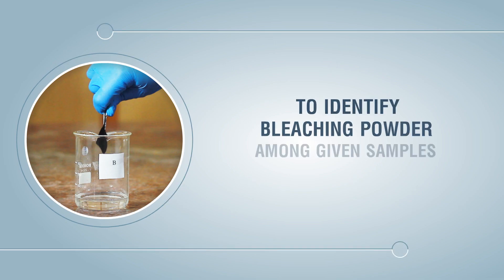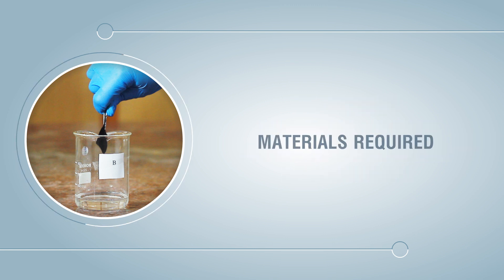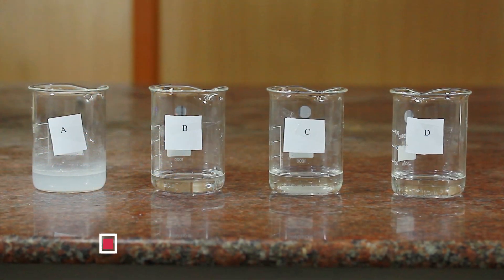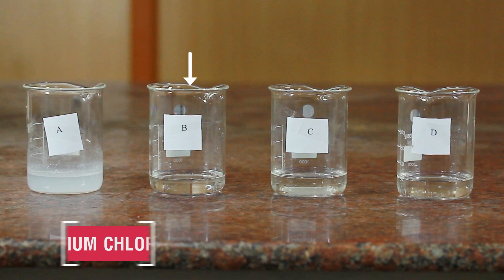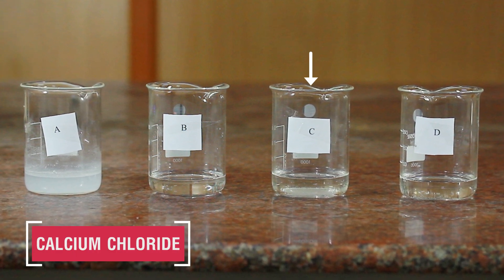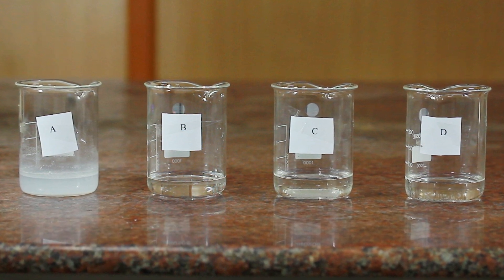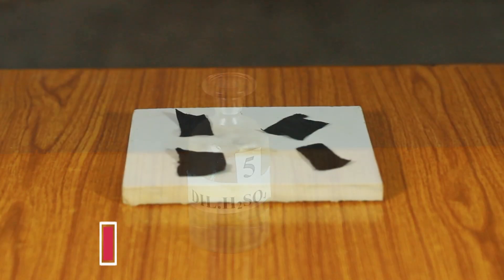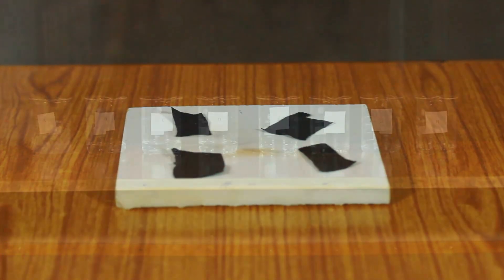To identify bleaching powder among given samples of chemicals. Materials required: four solutions of bleaching powder, sodium chloride, calcium chloride, and ammonium chloride (or alternate salts), dilute sulfuric acid, four small pieces of colored cotton cloth (black), eight beakers of 100 ml, forceps or tweezers, and four glass rods.